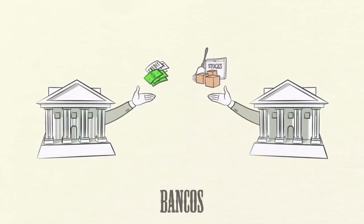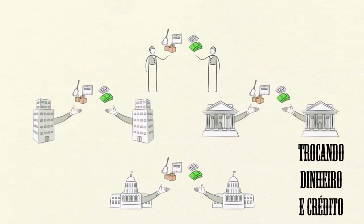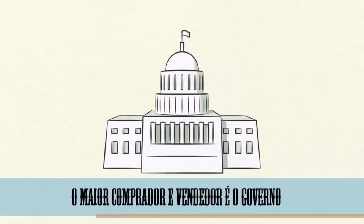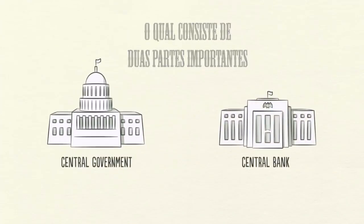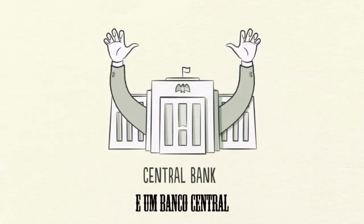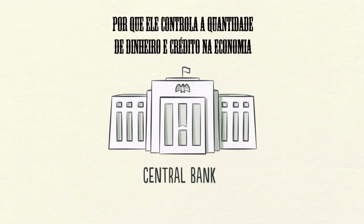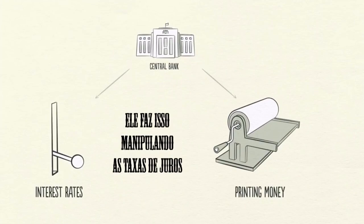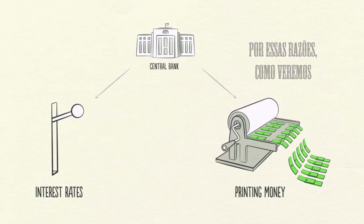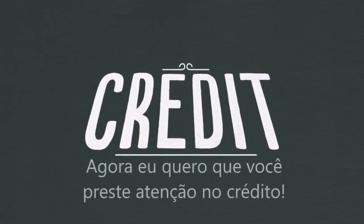People, businesses, banks, and governments all engage in transactions, exchanging money and credit for goods, services, and financial assets. The biggest buyer and seller is the government, which consists of two important parts: a central government that collects taxes and spends money, and a central bank, which controls the amount of money and credit in the economy. It does this by influencing interest rates and printing new money. The central bank is an important player in the flow of credit.